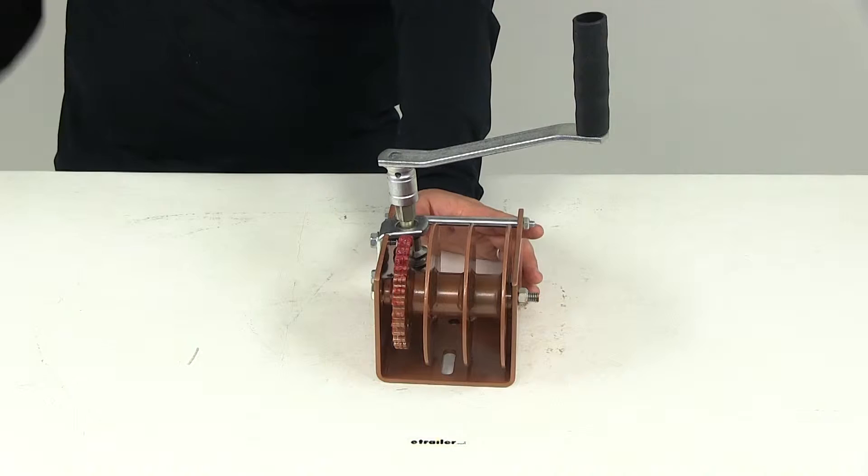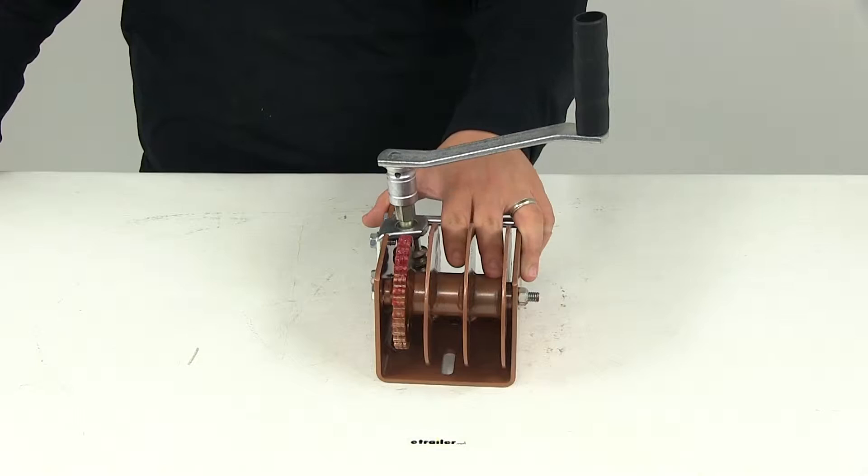Today we're going to be taking a look at part number DL10965. This is the Dutton-Lanson Worm Gear hand winch with a hex drive when it comes to the handle as well as a split reel design for two cables.